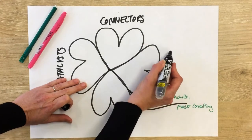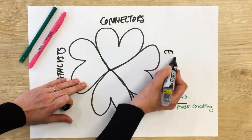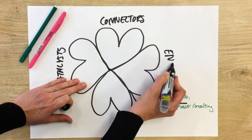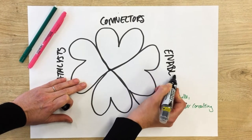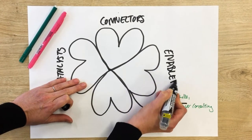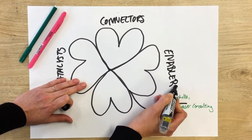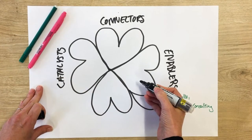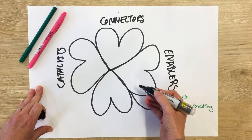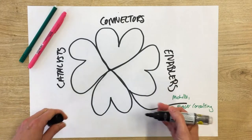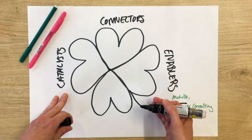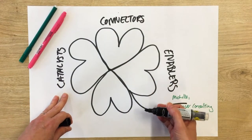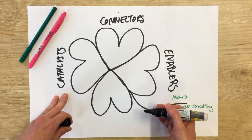The third group are the Enablers. These people help you to realise your idea by getting you to take action. They might support you to get things done or just push you to stop procrastinating.